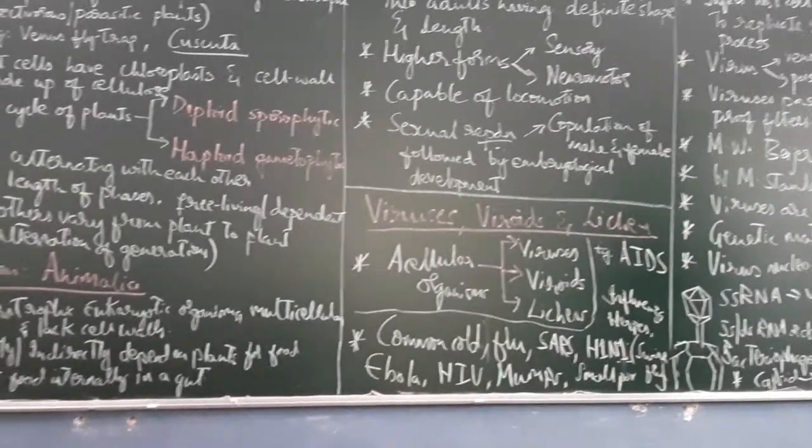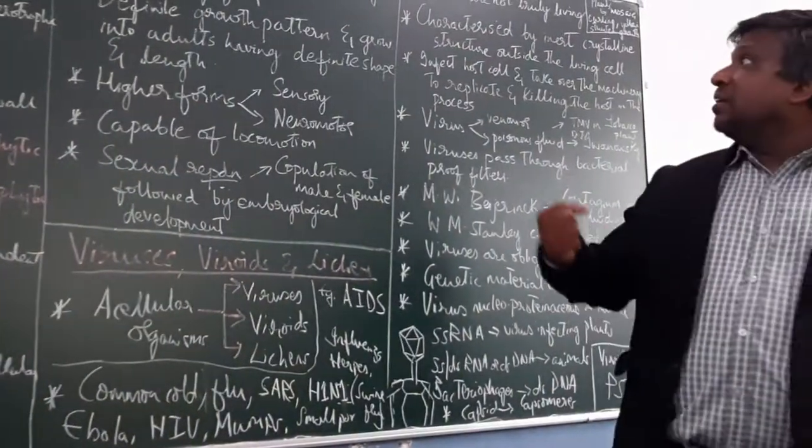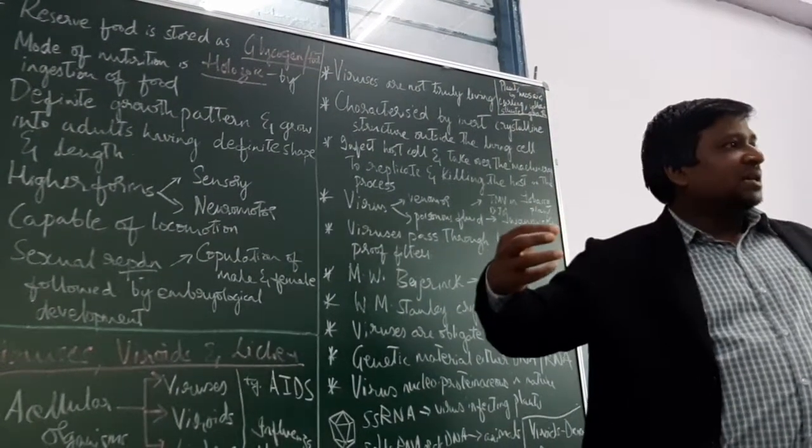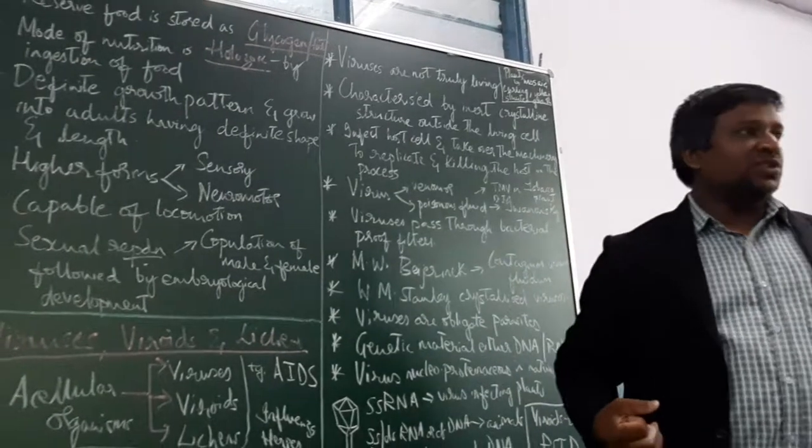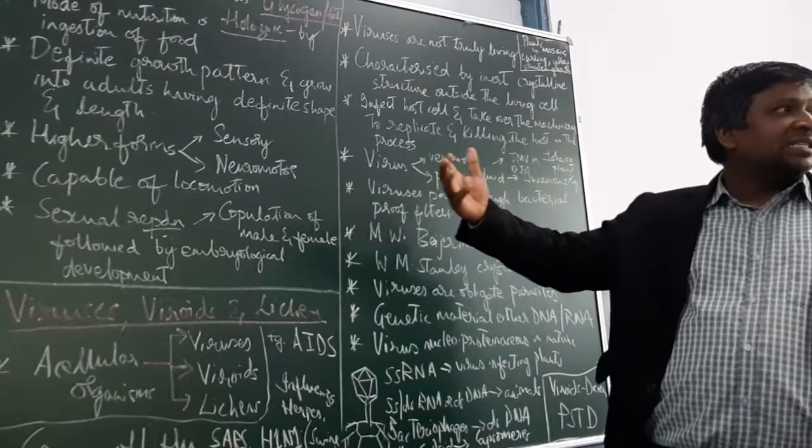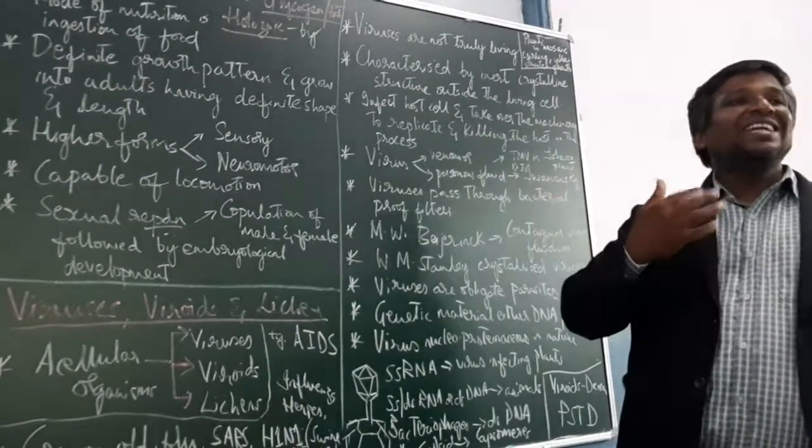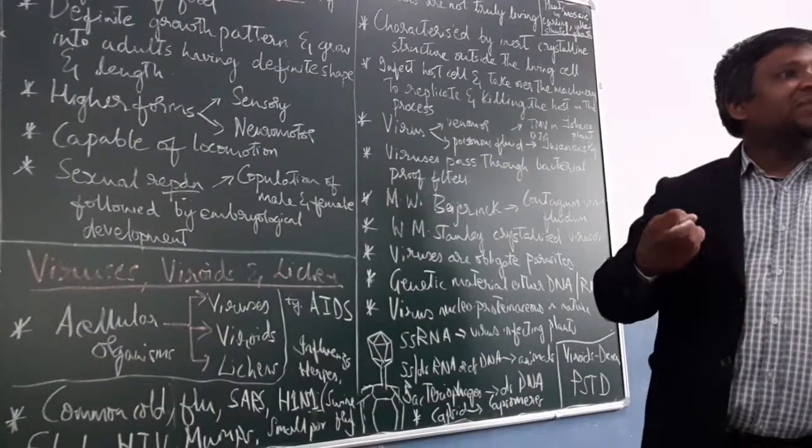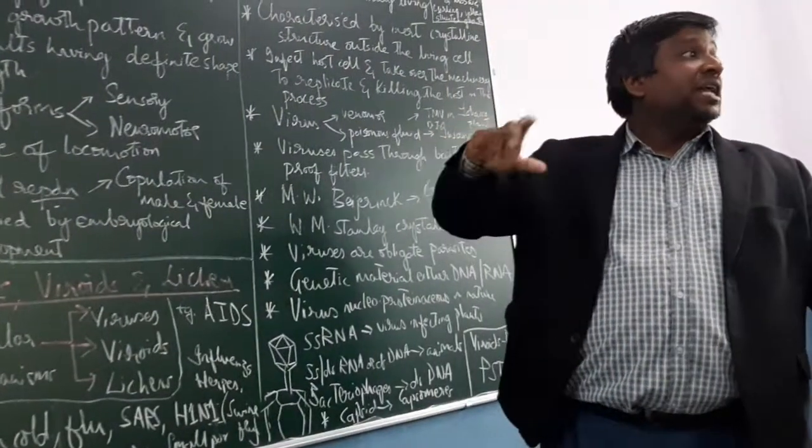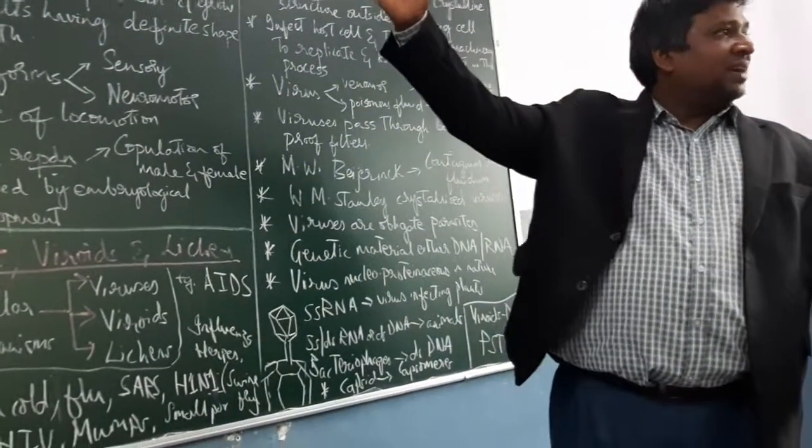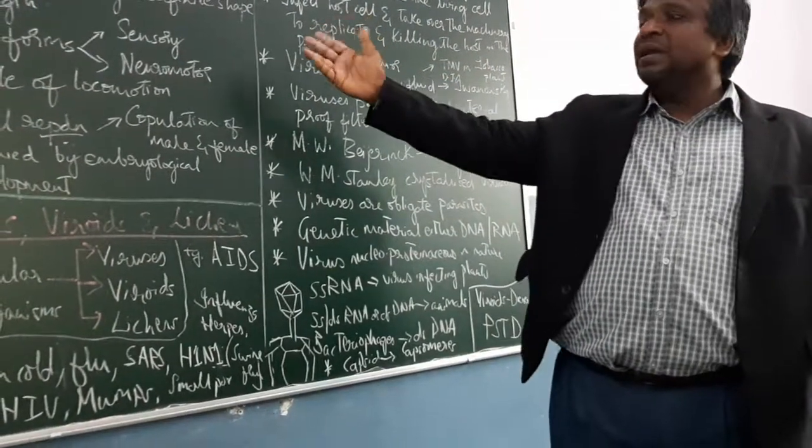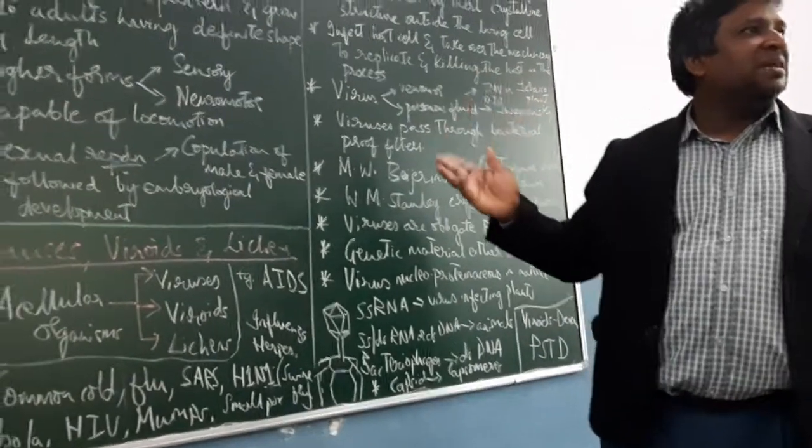They digest the food internally in a gut. Reserve food material is stored as glycogen in our muscles or as fats. The mode of nutrition is holozoic, meaning there is ingestion of food and complete digestion takes place within the gut. There is a definite growth pattern from infant to adult, so growth is definite with shape and length already pre-decided.